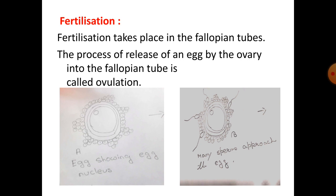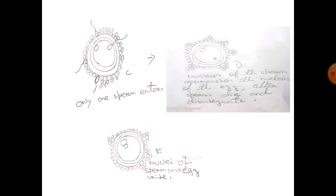The process of fertilization has a few stages. First, the egg shows its nucleus. Then, many sperms approach the egg — sperms that enter the vagina swim upwards and reach towards the egg. Out of millions of sperms, only a few reach the upper part of the fallopian tube, and out of those, only one sperm enters the egg.